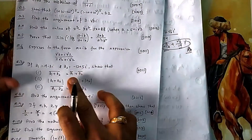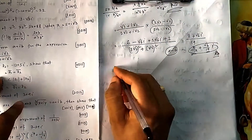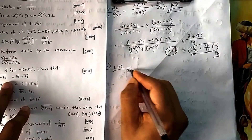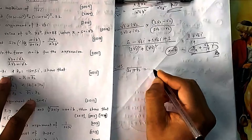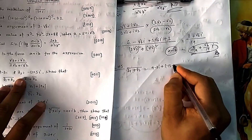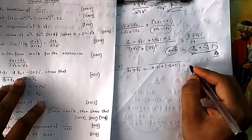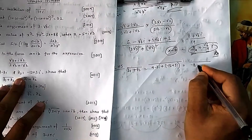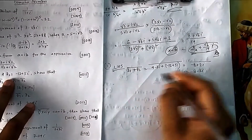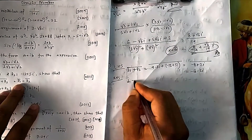In question 7, you have to show certain properties. It is straightforward — do LHS and RHS separately. For the first part, LHS is the conjugate of (z₁+z₂). Add the two complex numbers — say 4−3i and −12+5i — then take the conjugate. Adding gives −8+2i, and taking the conjugate gives −8−2i.